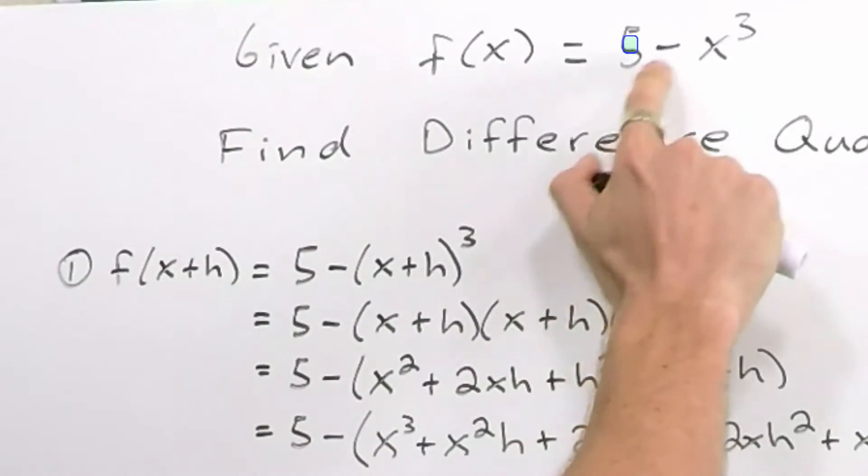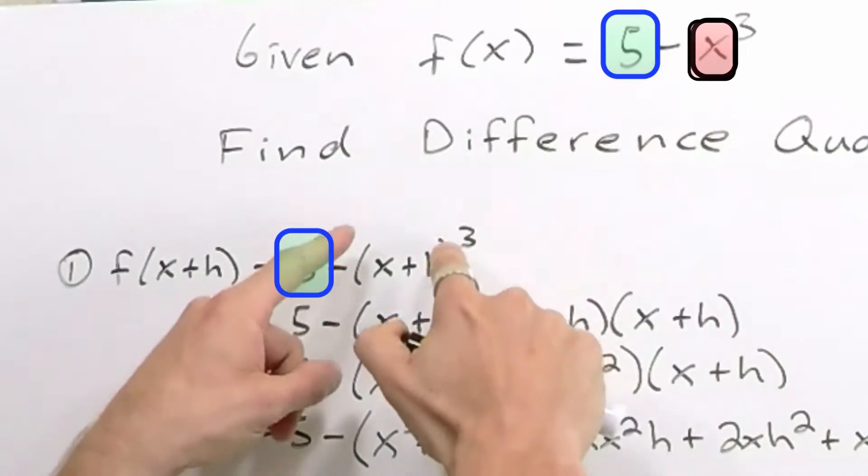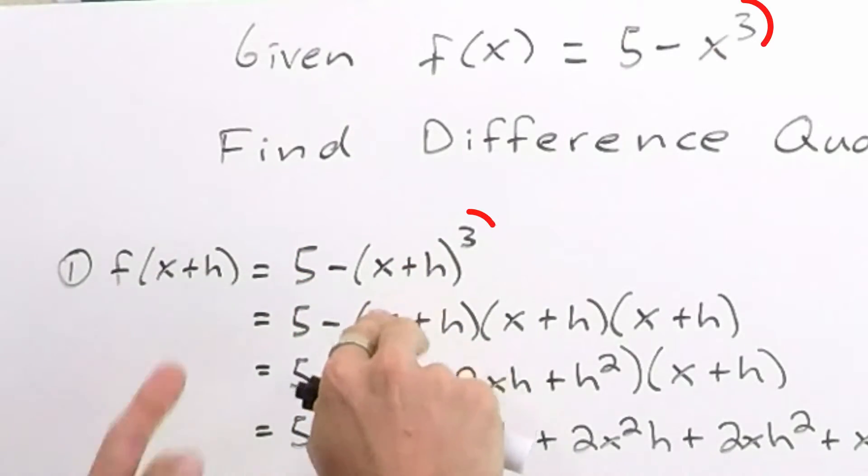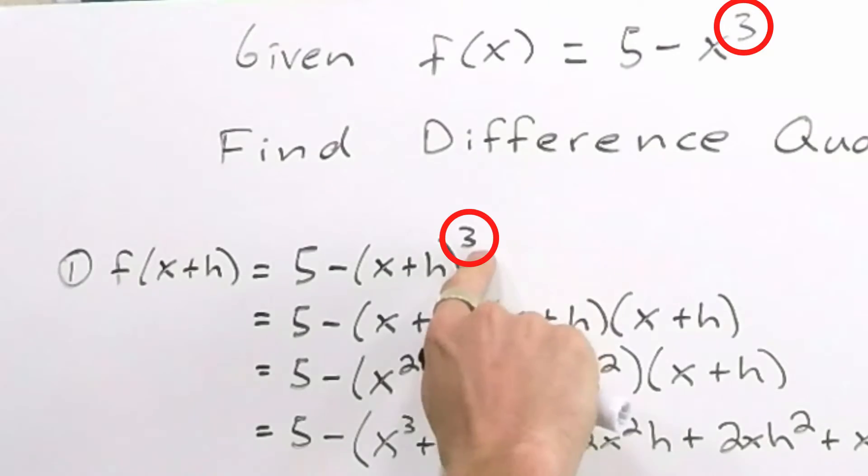So here we had five minus, we replaced x with a set of parentheses, and then inside of those, we jam in the x plus h. We still have cubes, so the cubed appears here.